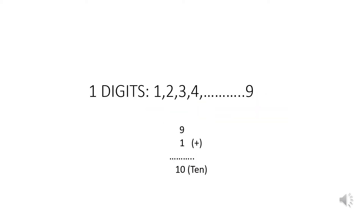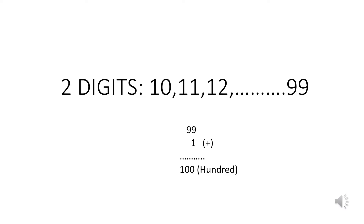One-digit numbers are from 1 to 9. The smallest one-digit number is 1 and the greatest one-digit number is 9. When we add 1 to the greatest one-digit number 9, we get 10. Ten is the smallest two-digit number.